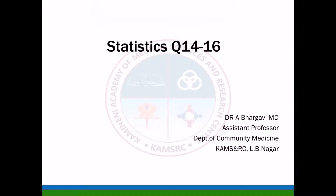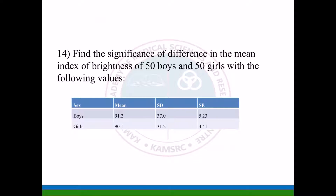Good morning children. Today we will be discussing statistics questions 14 to 16. The 14th question is: find the significance of difference in the mean index of brightness of 50 boys and 50 girls with the following values. The table has four columns: sex, mean, standard deviation, and standard error. Boys: mean 91.2, girls: mean 90.1, SD is 37 and 31.2, SE is 5.23 and 4.41.